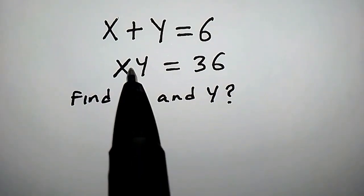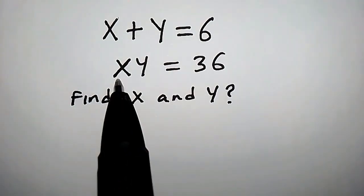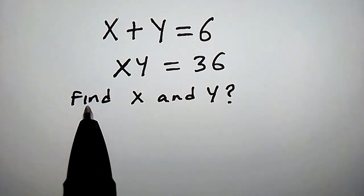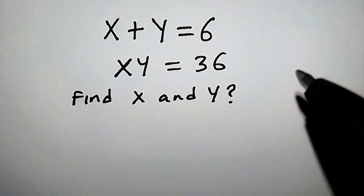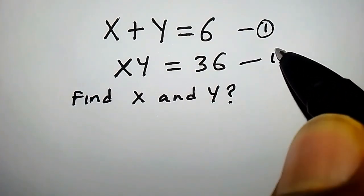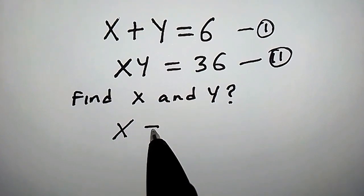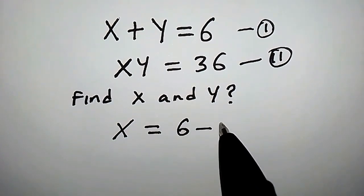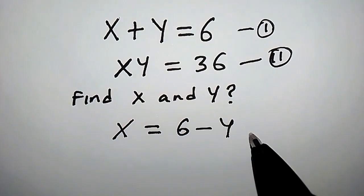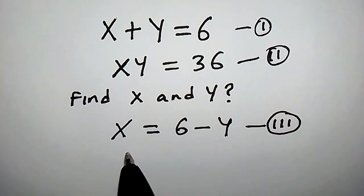Welcome. We have x plus y equal to 6 and xy equal to 36. The question says find x and y. Let us call this equation 1 and this equation 2. From equation 1, x is equal to 6 minus y when we transfer y to the right side. Let us call this equation 3.